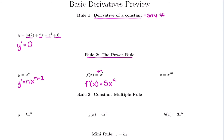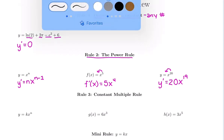We can do that same thing again — keep bringing down the power and subtracting one for the new power. This function is called y, so the derivative is y prime. We bring down the 20 and subtract one for the new power: 20 minus 1 is 19. So the derivative of x to the 20th is 20x to the 19th.